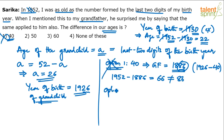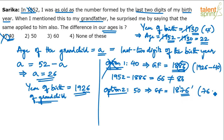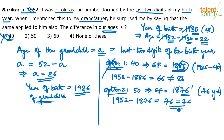Option two: the difference in ages is 50. The grandfather's year of birth would be 1926 − 50 = 1876. According to this, the grandfather's age should be 76 years. Check: 1952 − 1876 = 76. The last two digits of 1876 are 76, and the age is 76 — the condition is satisfied. So option two is the correct answer; the difference in their ages is 50.